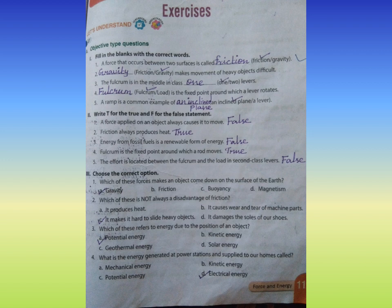Roman numeral three, choose the correct option. Number one: Which of these forces makes an object come down on the surface of the earth? Answer A, gravity. Number two: Which of these is not always a disadvantage of friction? Answer C, it makes it hard to slide heavy objects.